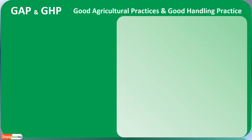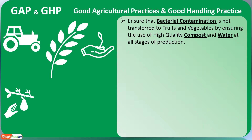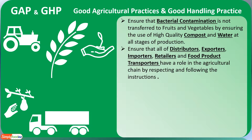Now let's have a small hint about GAP or GHP, which stands for good agricultural practices and good handling practices. It helps ensure that bacterial contamination is not transferred to fruits and vegetables, by ensuring the use of high-quality compost and water at all stages of production.